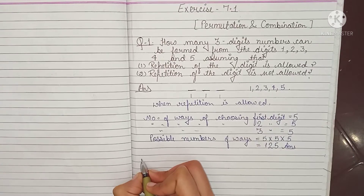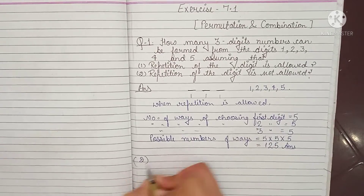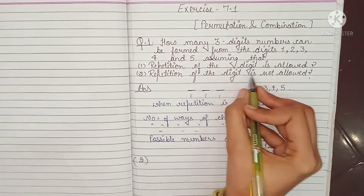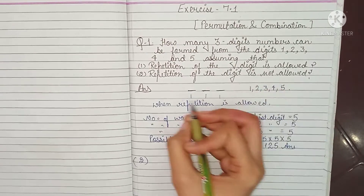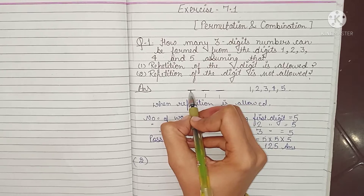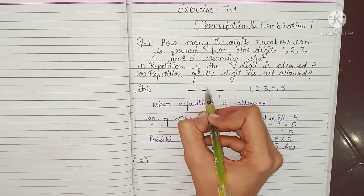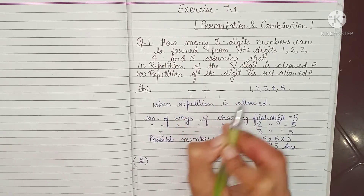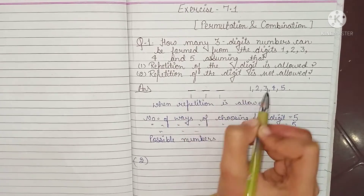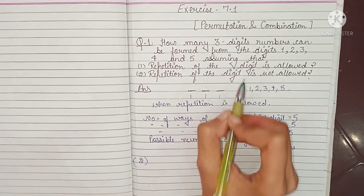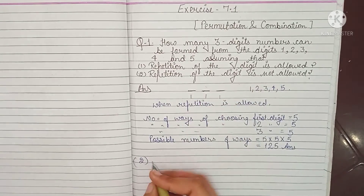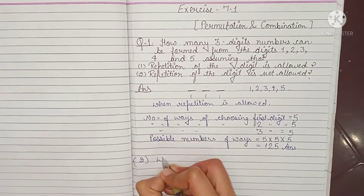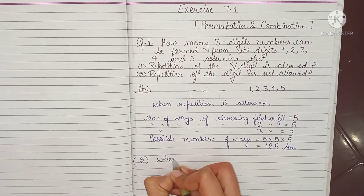Second part of this question: if the repetition of the digit is not allowed — it means if 1 comes at the 1st place, then 1 will not come at the 2nd place or 3rd place. Each digit can exist only one time. So what will be the number of ways when repetition is not allowed?